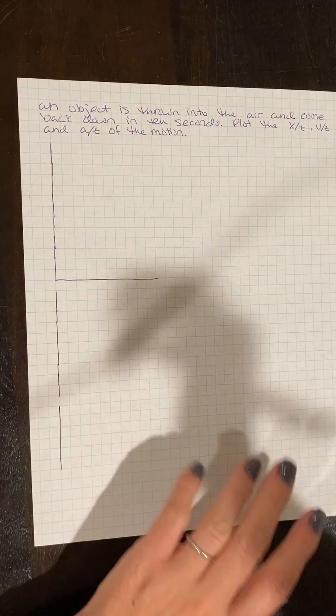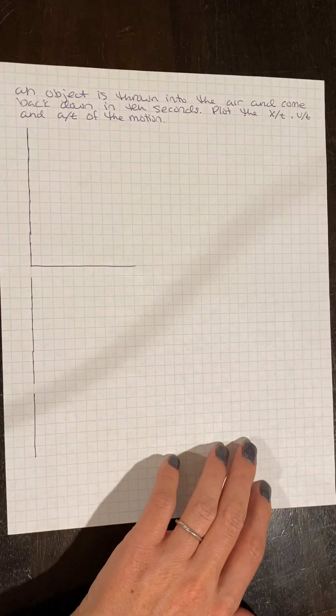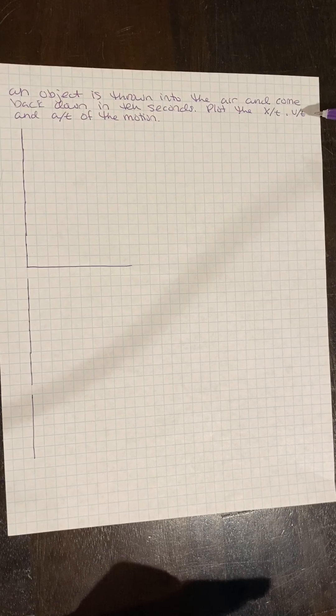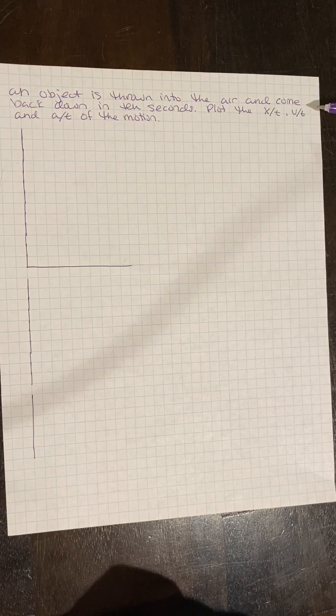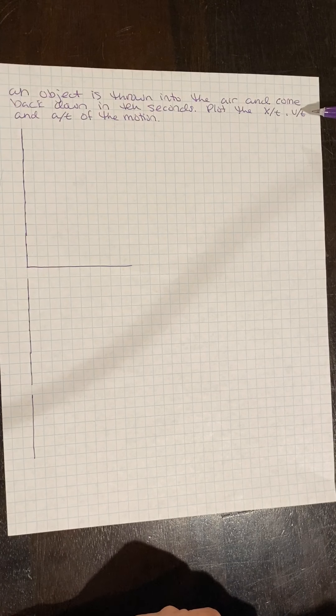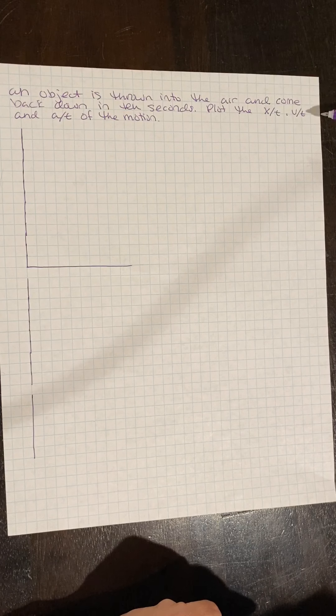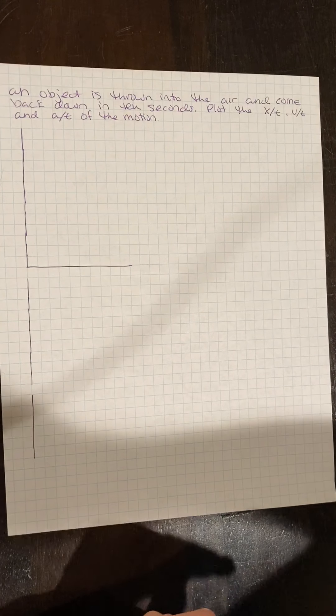All right, this video is going to show you how to graph something that is in freefall. My word problem says an object is thrown into the air and it comes back down in 10 seconds. We're going to plot our displacement time graph, velocity time graph, and acceleration time graph of this motion.